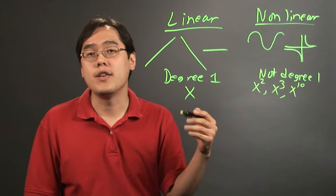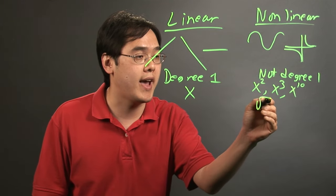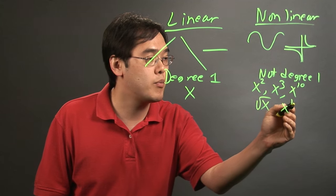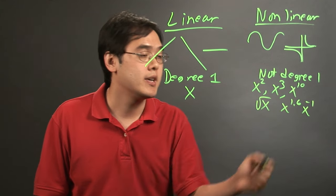But also, nonlinear can be thought of as non-polynomials. For example, you may have square root of x. You could have x to the 1.6, or even negative exponents, just like so.